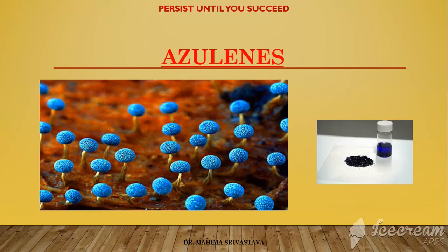Our compound amongst the fused bicyclic compounds is azulene. As you can see, a very beautiful picture here shows blue-colored mushrooms which are the Lactarius indigo mushroom, and they get their blue coloration from a derivative of azulene. Once the compound is isolated from any of the natural sources, it gives a very beautiful blue color on isolation.